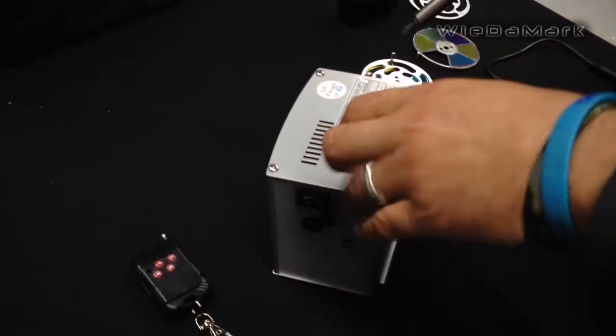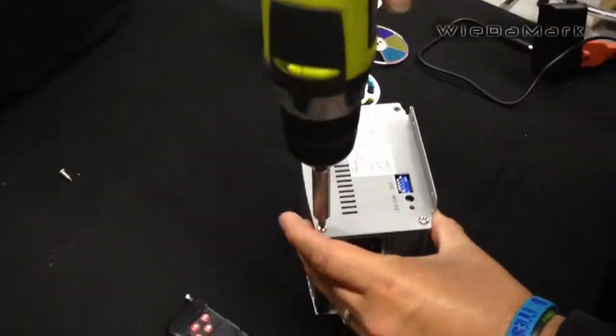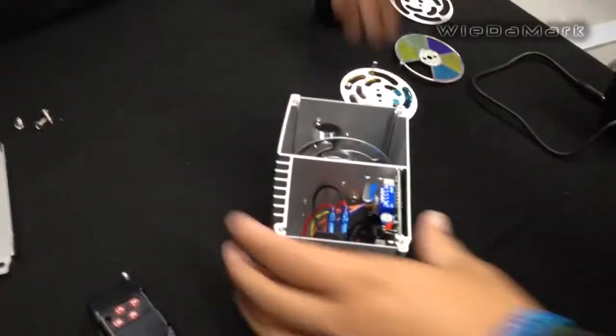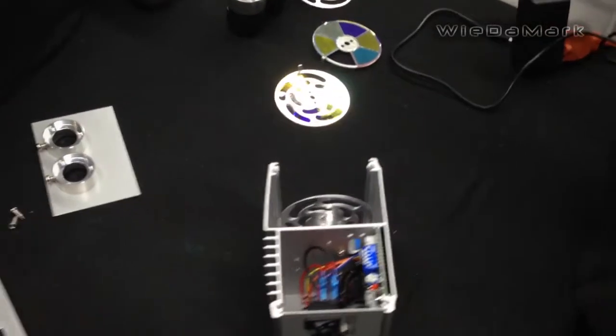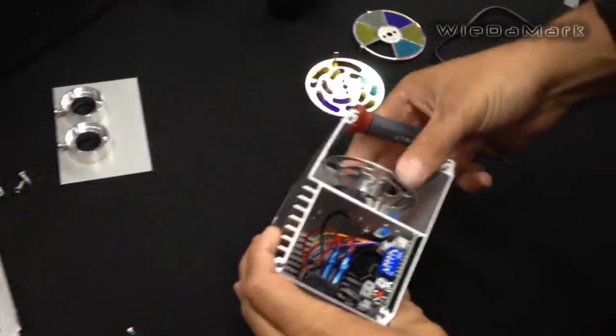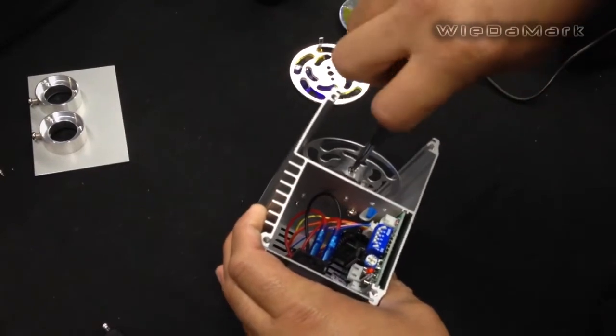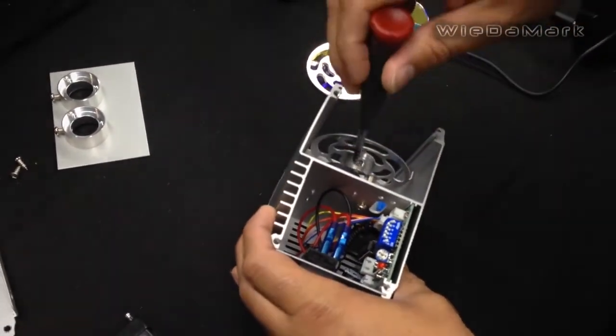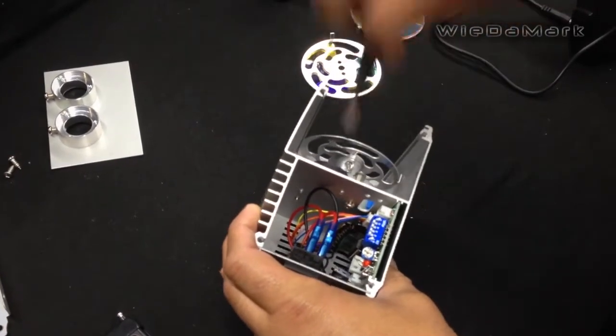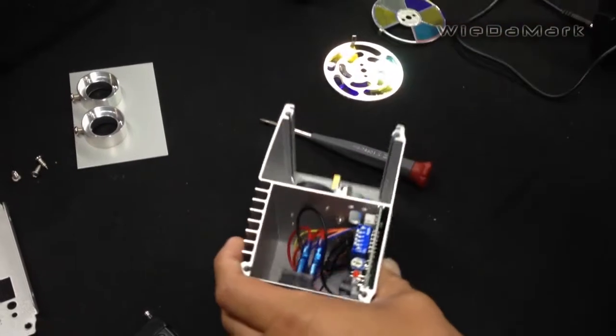On the side with the dip switches you want to remove all four screws. Next remove the front plate and then on the wheel it's got two set screws. You're going to remove or loosen them and then just pop the wheel out like that.